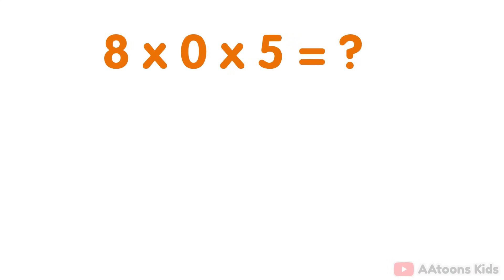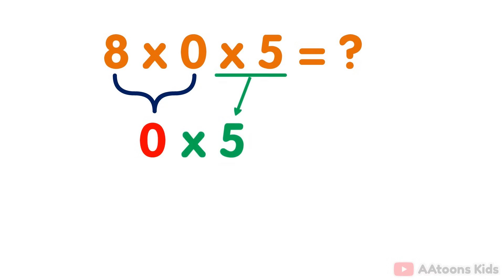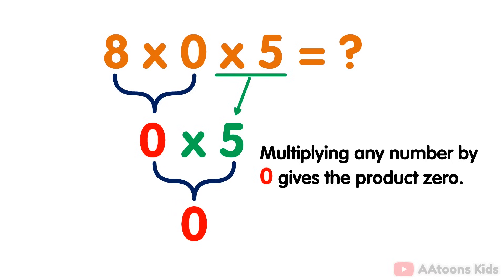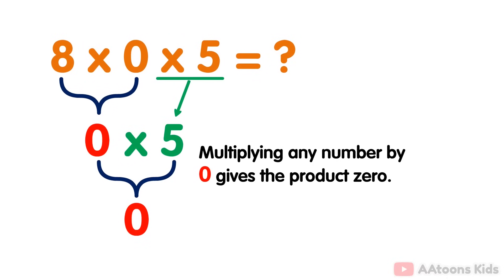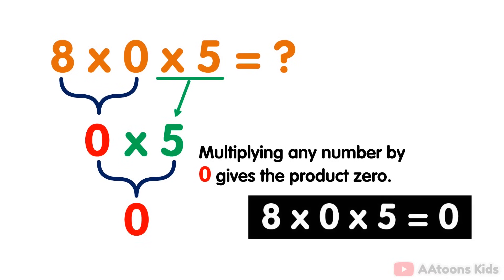Simply multiply the numbers 8 and 0 which equals 0, then you multiply the result 0 by 5. Multiplying any number by 0 gives the product 0. Therefore the answer to 8 multiplied by 0 multiplied by 5 is 0.